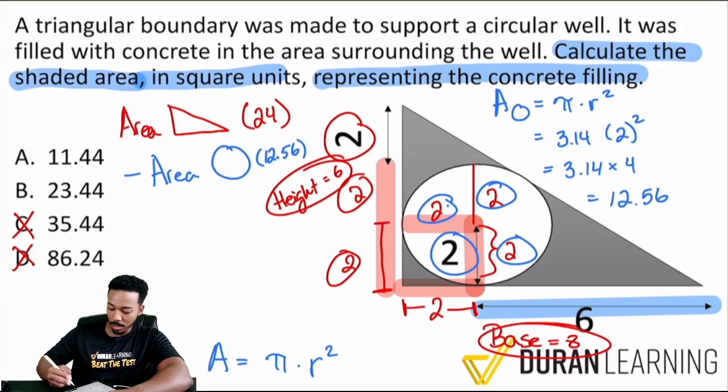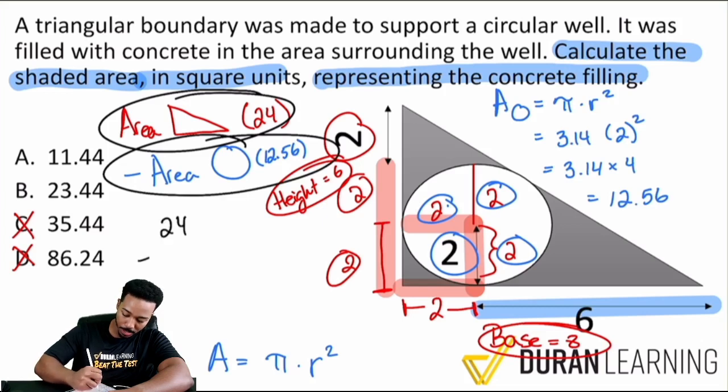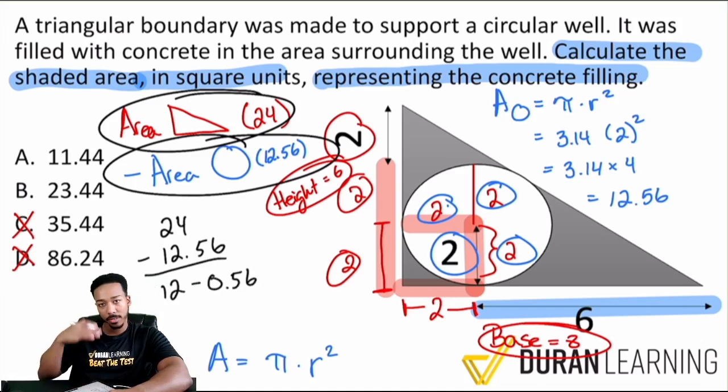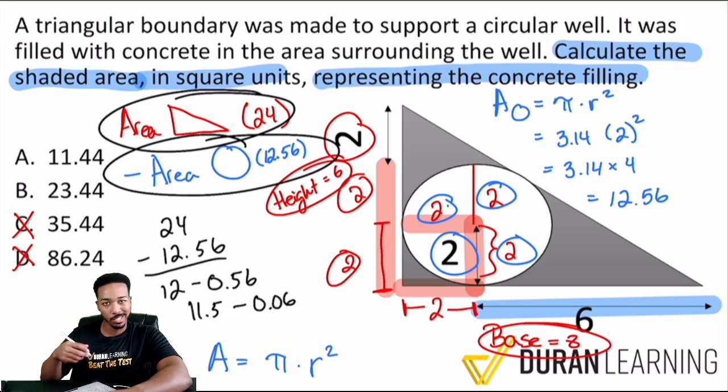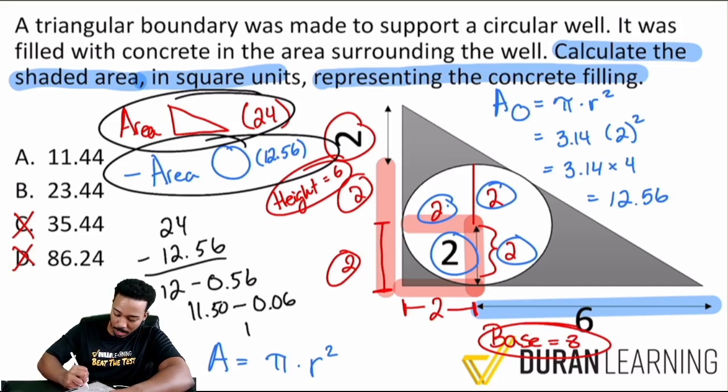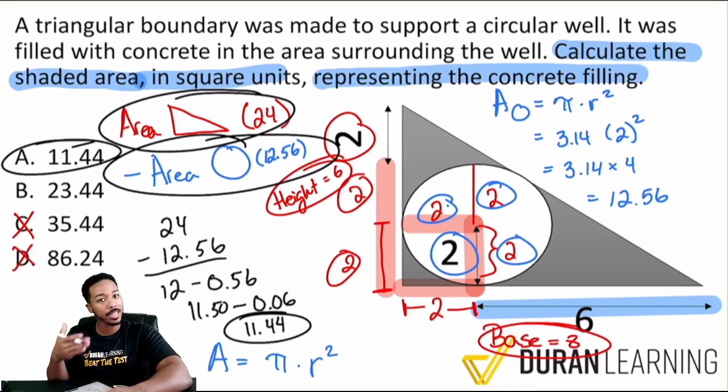And so there it is, 12.56. And so at this time, you can absolutely be confident that you're going to take these areas away. And so you're going to do 24 minus 12.56. And so in doing so, you can say, hey, let me subtract the 12 first. So I subtract the 12 from 24. So I get 12. And I still have to subtract the 0.56. I can take away the 0.5 first. So 11.5 minus 0.06. And again, I'm doing this mentally. I don't want to have to borrow a bunch of ones. It's not necessary. And so minus 0.06, you get 11.44. Booyah. And so now we can be confident and confirm that A is indeed the answer.